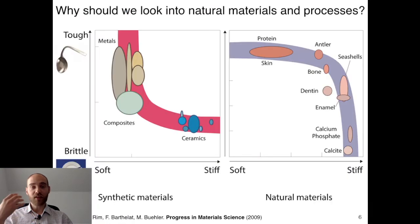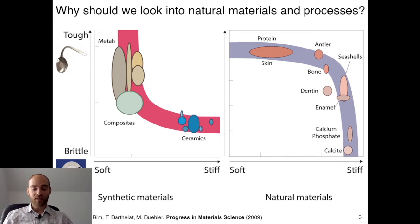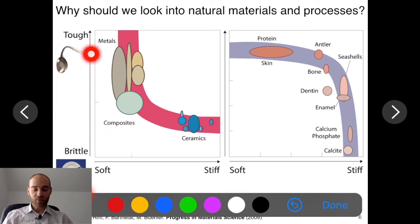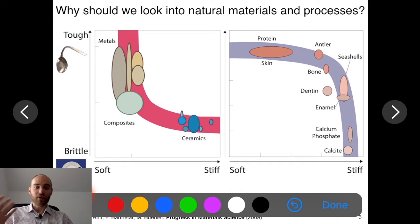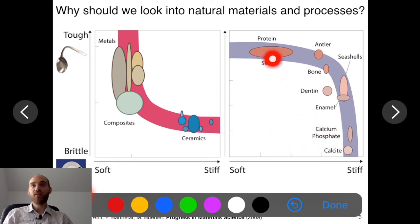I want to show another approach to reinforcing ceramics, found in natural materials. If we plot synthetic materials from brittle to tough, ceramics are very brittle while metals are very tough, with composites in between. On a stiffness axis, ceramics are the stiffest and metals are lower. When you mix these properties you typically end up on what's called the banana curve — a combination of properties, but not a great one.